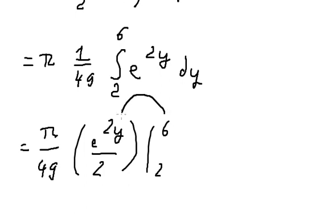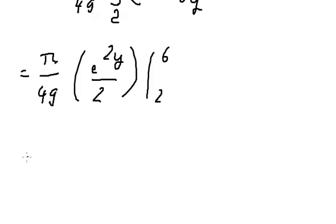Now we put 6 in here, 2 in here. So we have π over 98, and we have e to the power of 12, 6 times 2 we have 12.